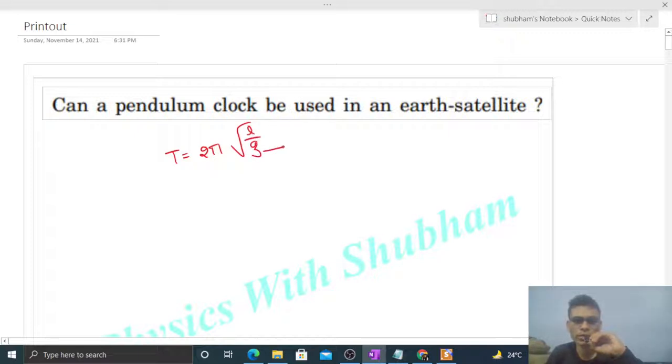Here, g is g_effective or g_apparent. Now in an earth satellite, what will be the value of g_effective? That will be zero. Why?